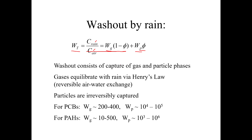Rain captures both particles and gas phase chemicals. It's actually very effective at stripping particles out of the atmosphere — that's why the air is so nice and clean after a good heavy rainfall. Snowflakes also do a really good job of stripping stuff out of the atmosphere. For particles, when they are captured by a raindrop or snowflake, it's pretty much an irreversible process — the Roach Motel: you check in, you don't check out. But gases actually equilibrate, which means it's reversible and can go either way.